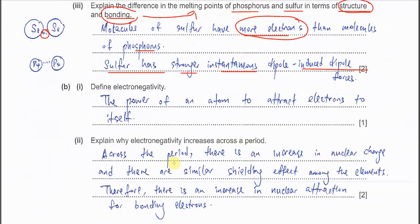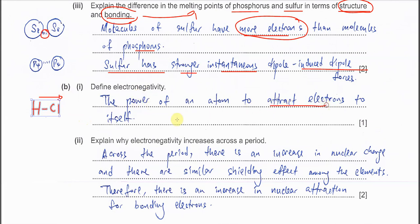Part B one: define electronegativity. It is the power of an atom to attract electrons to itself. For example, in H–Cl, chlorine has greater electronegativity because it is able to pull or withdraw electrons towards itself through the covalent bond. So electronegativity is the power of an atom to attract electrons to itself through the covalent bond.